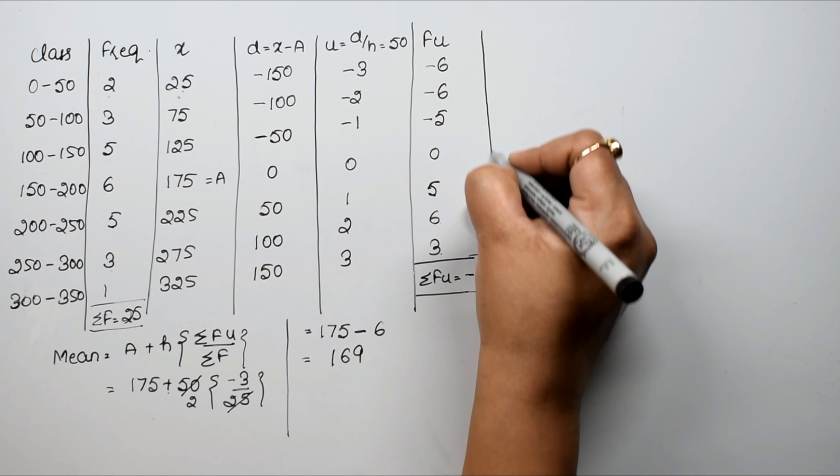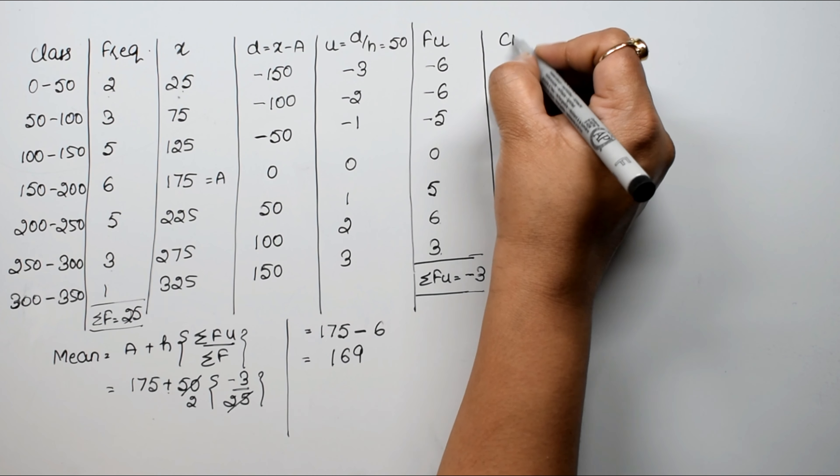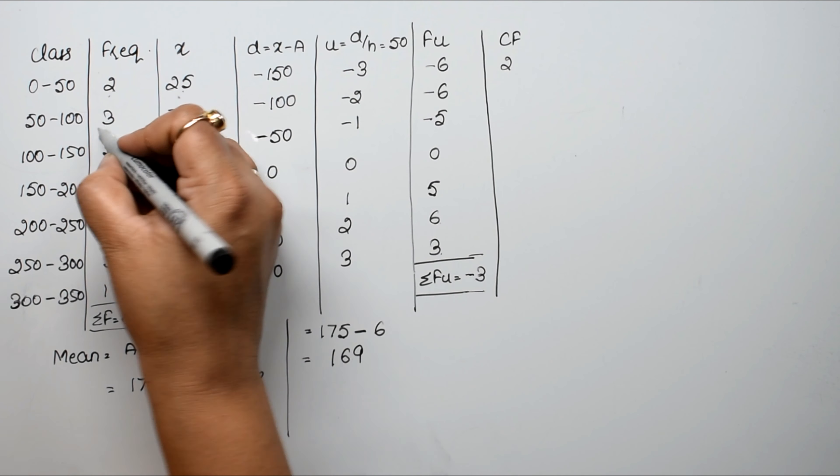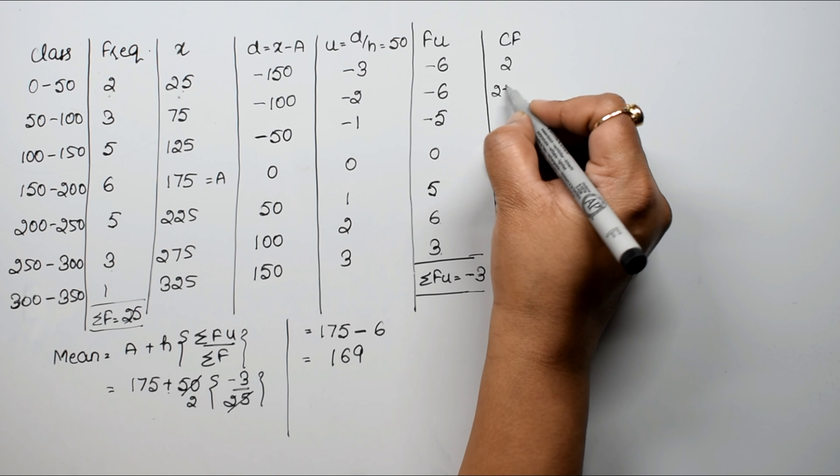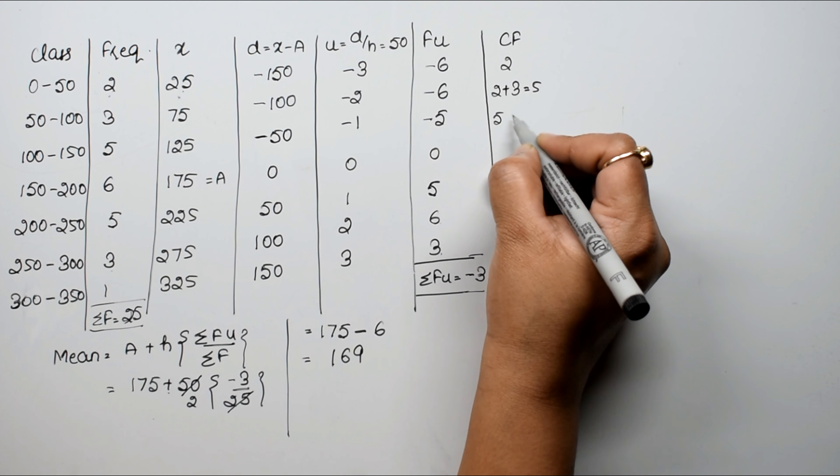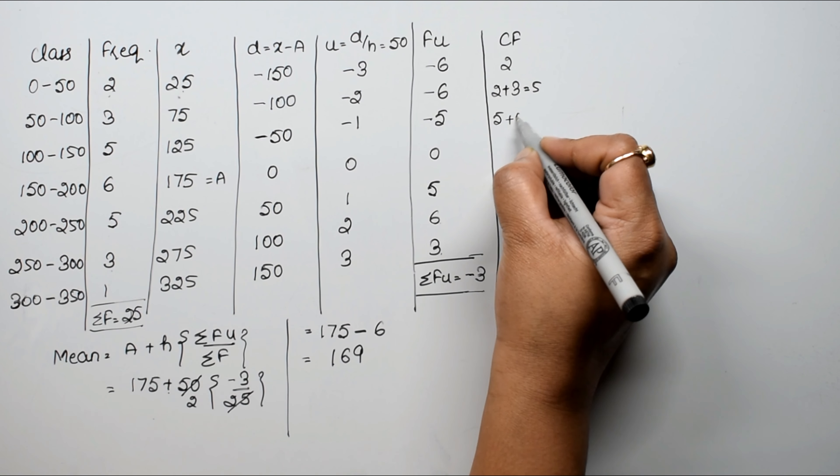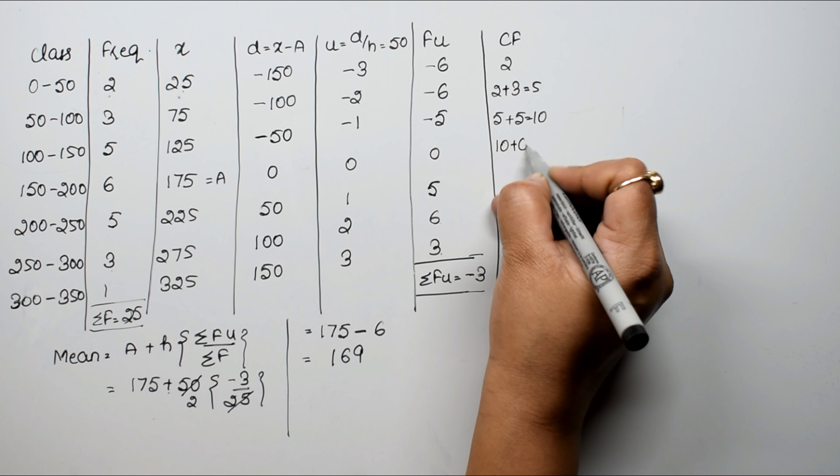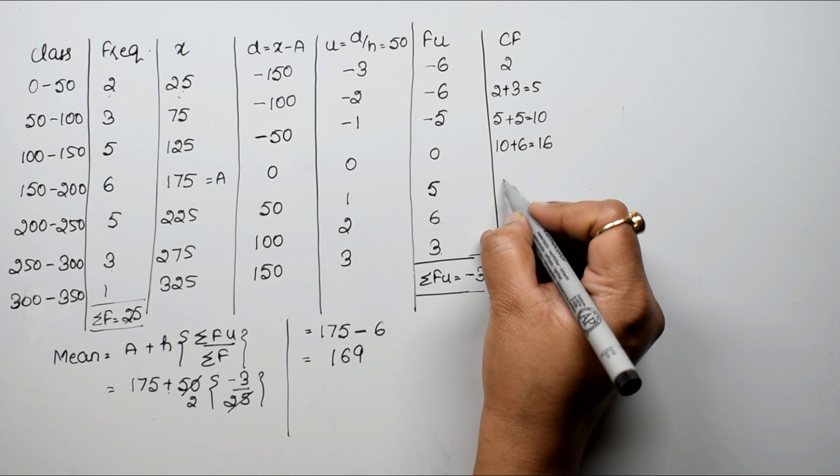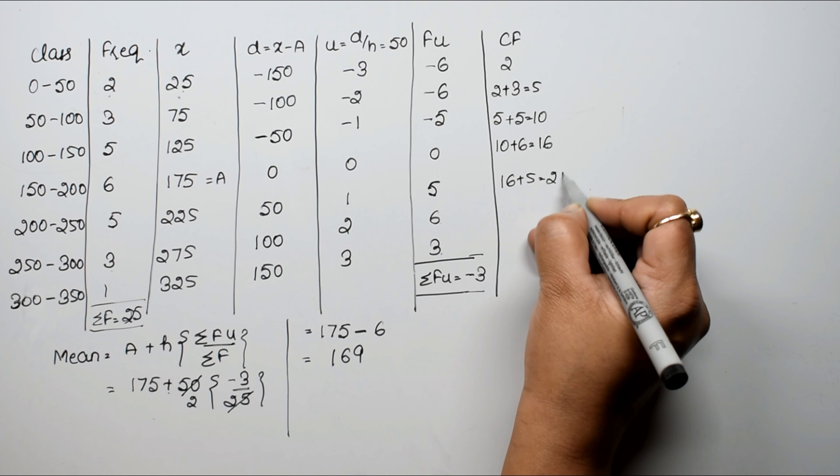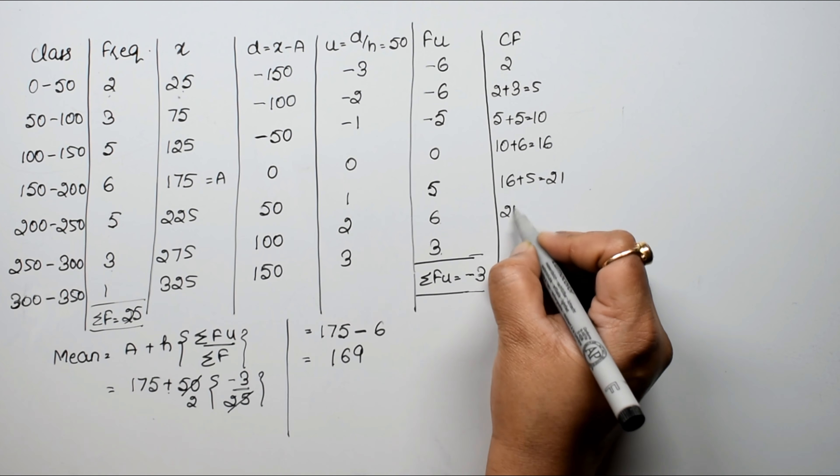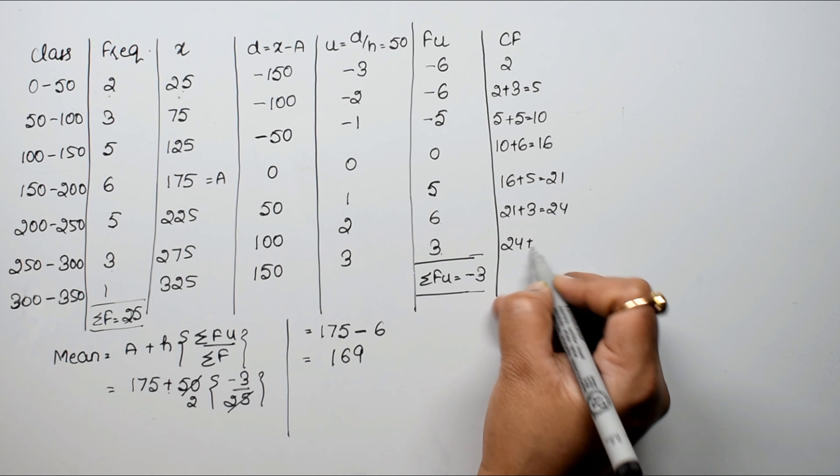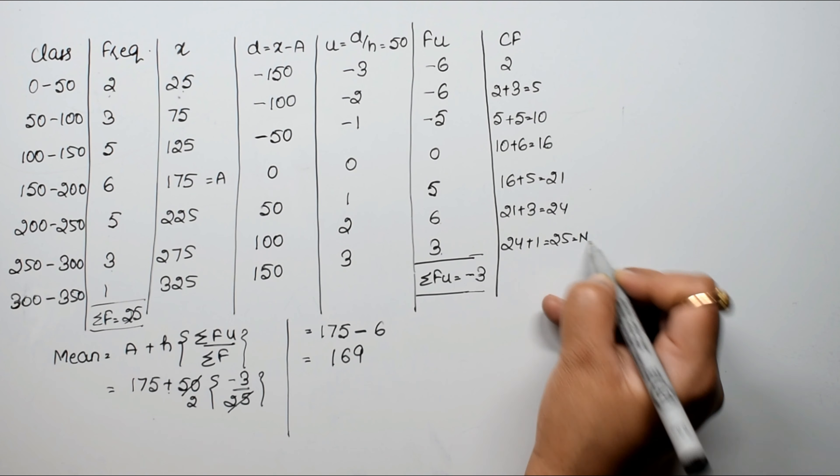Now to find median, we have to find cumulative frequency. Cumulative frequency is: first as it is 2, then 2 plus 3 is 5, 5 plus 5 is 10, 10 plus 6 is 16, 16 plus 5 is 21, 21 plus 3 is 24, and 24 plus 1 is 25. This became our n.